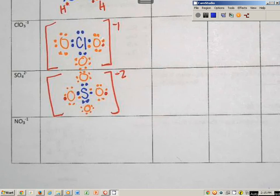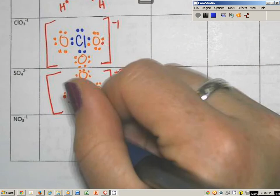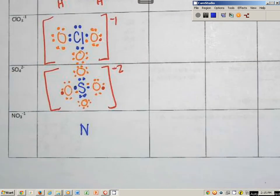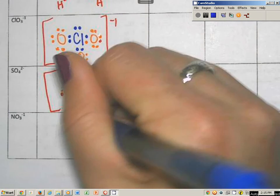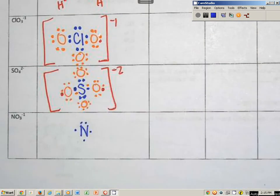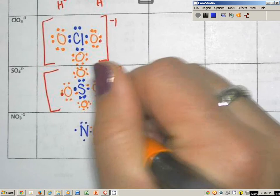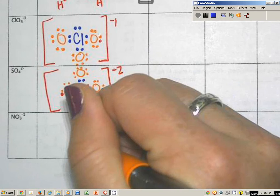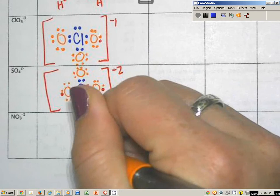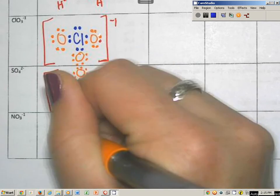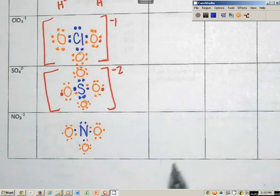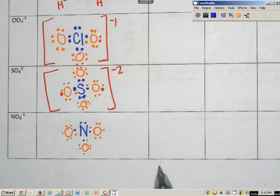My last one is nitrate, NO3. N's going to go first. N has five dots. And there's three open spaces, one on the right, one on the bottom, and one on the left. And that's where I should put them first. I shouldn't automatically start making coordinate covalent bonds. I need to make regular single bonds first. Bryson, what are you doing? Nice. Well, you can pick them up in a minute.